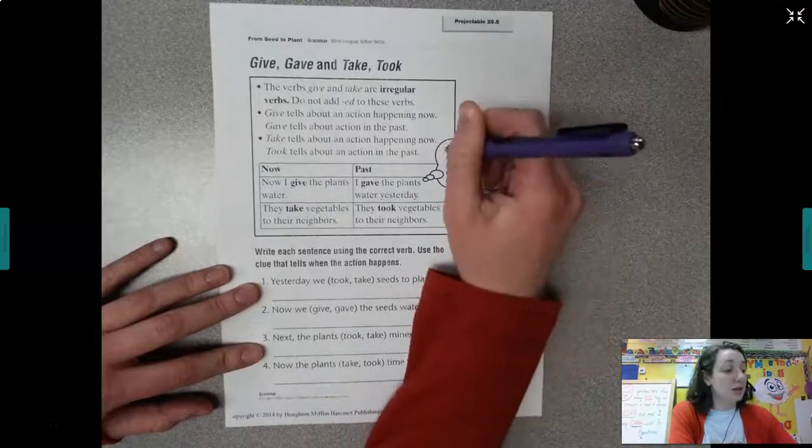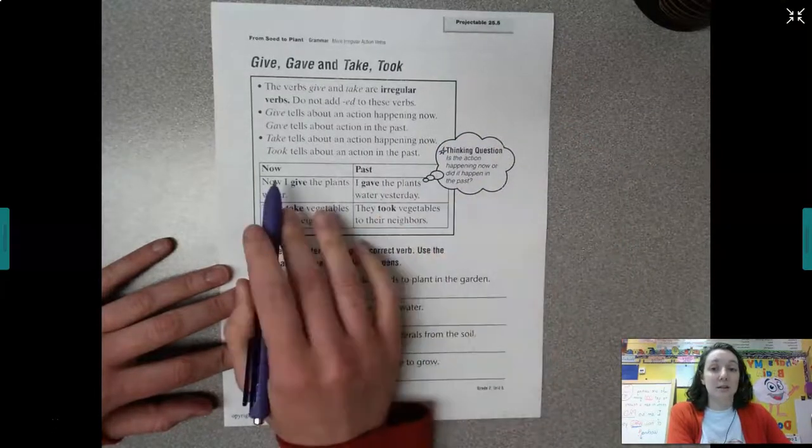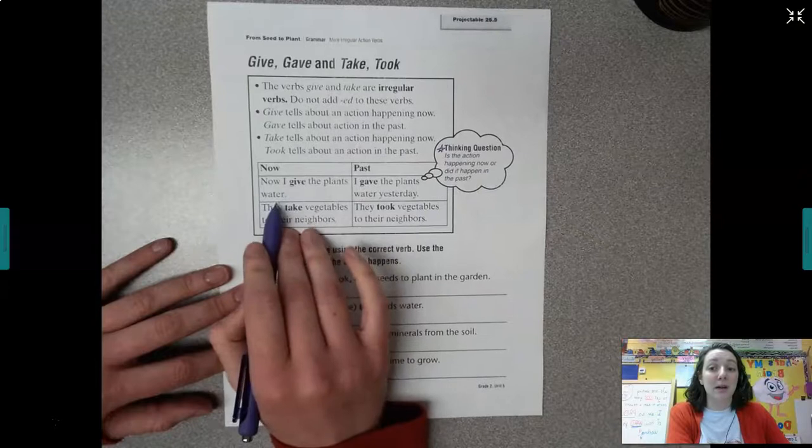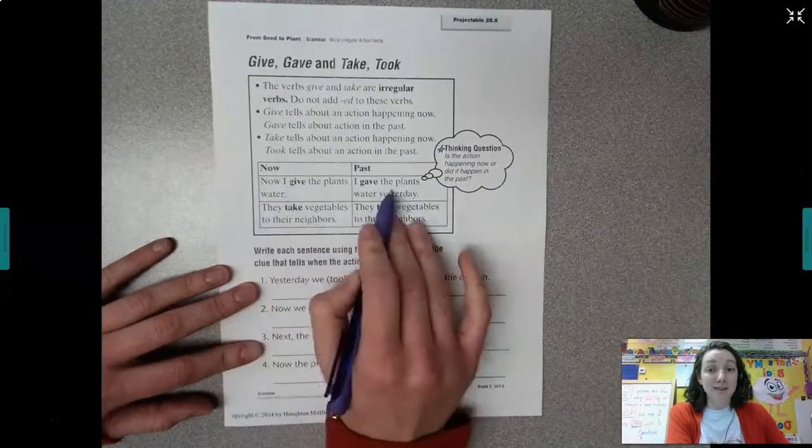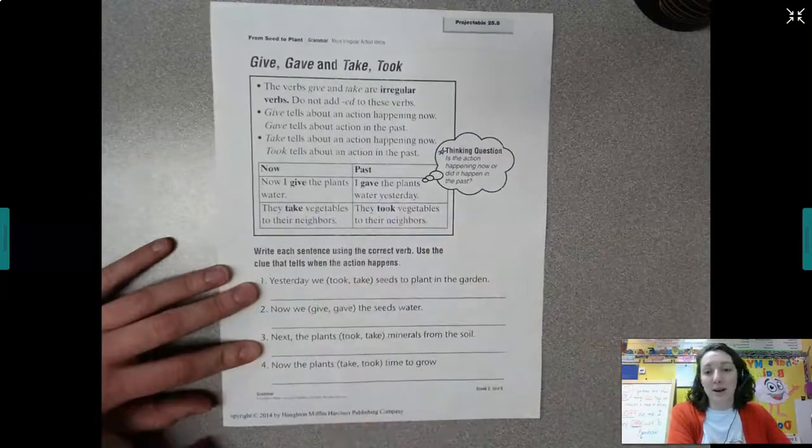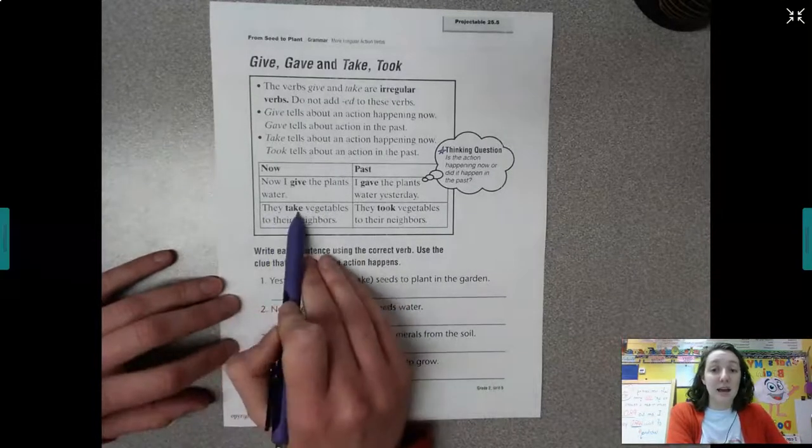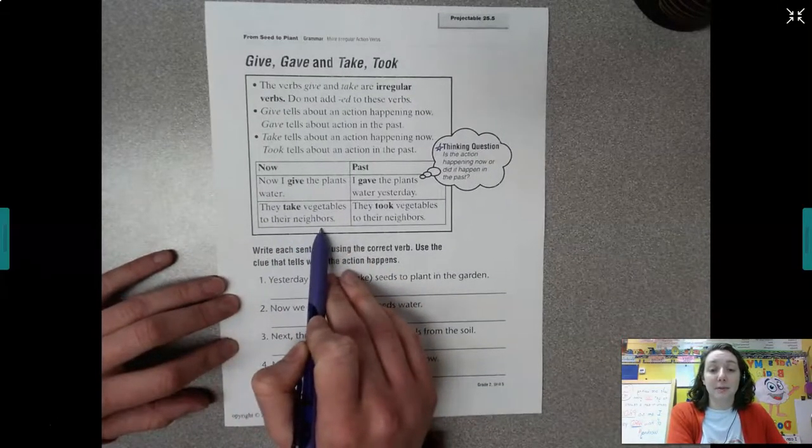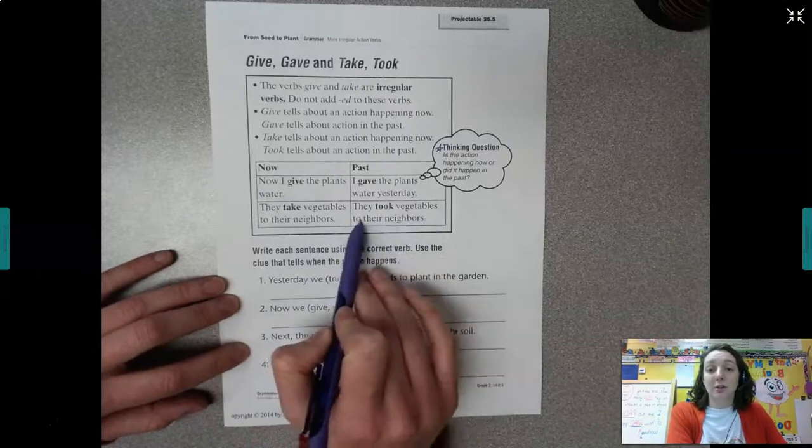So again, that thinking question, is the action happening now or did it happen in the past? Now, I give the plants water. In the past, I gave the plants water yesterday. In the present, they take vegetables to their neighbors. Past, they took vegetables to their neighbors.